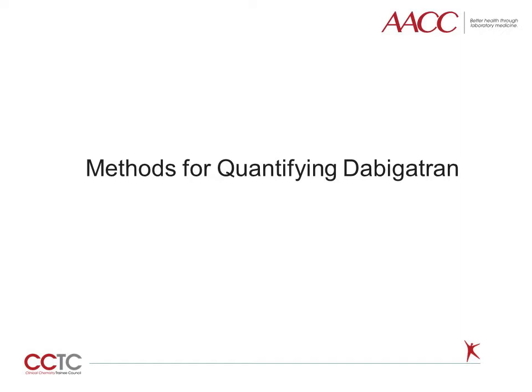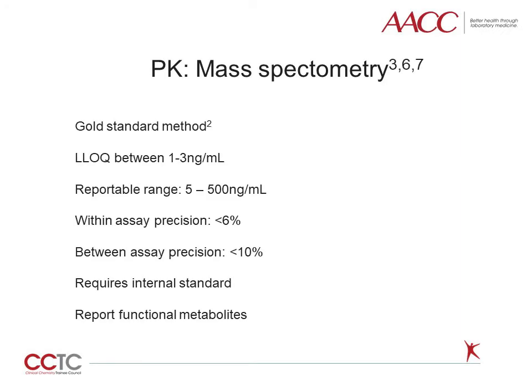We will now review the laboratory methods to quantify Dabigatran. The gold standard method to quantify Dabigatran is liquid chromatography tandem mass spectrometry, LC-MS/MS. This is the only method to quantitate direct oral anticoagulant agents that is specific to the drug being measured. For example, if a patient is on Dabigatran and heparin, this assay will measure only the Dabigatran that is present. If the patient were on a different direct thrombin inhibitor such as argatroban, the argatroban would not be measured in a Dabigatran mass spectrometry assay. When using mass spectrometry, active metabolites or conjugates of the drug must be considered as these may contribute to overall anticoagulation but would not be measured in a Dabigatran mass spectrometry assay.